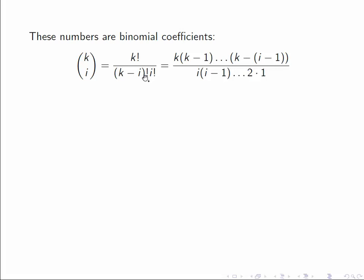If we write this out, we can cancel out the (k-i)! with the tail of k factorial. That just leaves us with k times (k-1), down to (k-i-1). The next term would be (k-i), which is cancelling out. And on the bottom we have i!. So both of these things, the top and the bottom, are a product of exactly i numbers.